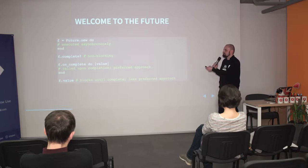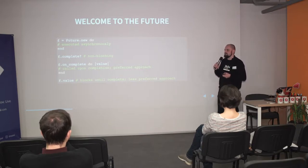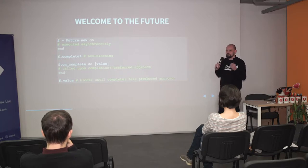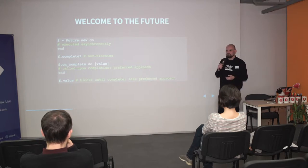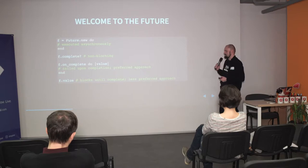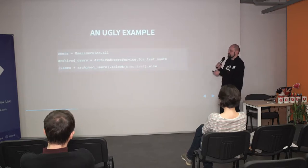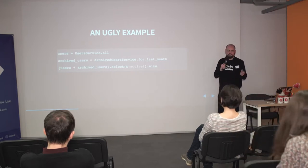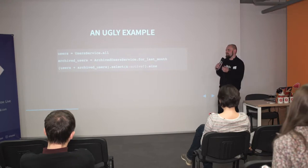This Future has a predicate method called `complete`, which is non-blocking and allows you to check if the block of code has completed at any moment. The `on_complete` callback allows you to have a handler when execution is accomplished. `value` is a blocking operation — when you try to request a value and the block has not completed yet, you will be blocked in the current thread until the block executes to its end.